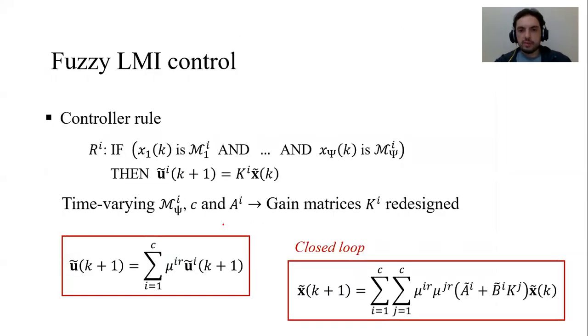Now with F prime in hand, we use parallel distributed compensation to obtain a fuzzy controller. The antecedent terms of the fuzzy controller are the same as that of the fuzzy model. Trapezoidal membership functions in the domain of the states. The consequent term of the control rule is a control law which depends on these matrices K, which should be redesigned whenever the model changes.